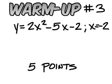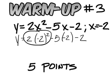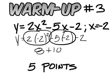For this one you should have y equals 2 times the quantity squared of negative 2 and then minus 5 times the negative 2 and then minus 2. So from this you'll get 4 times 2 which is 8, plus 10, and then minus 2. 18 minus 2 is going to be 16.